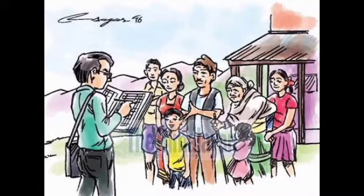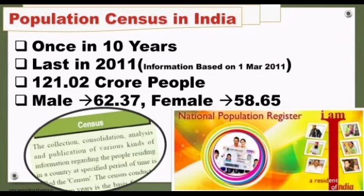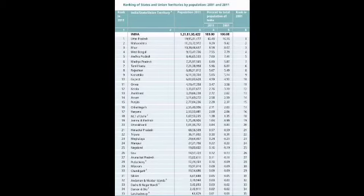In India, census activities are spearheaded by the Office of the Population Registrar General and Census Commissioner. The census is conducted once every 10 years in India. Information related to the population was collected as shown on 1st March 2011. According to the 2011 Census, there are 121.02 crore people in India. Now there are 138 crore people in India.